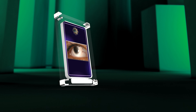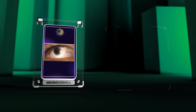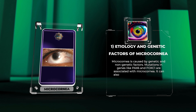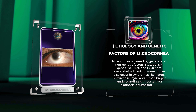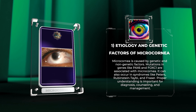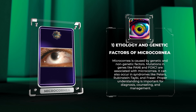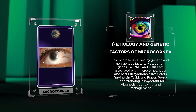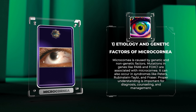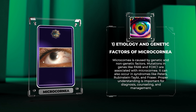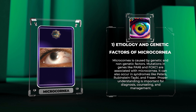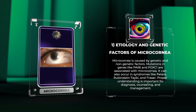Microcornea is caused by genetic and non-genetic factors. Mutations in genes like PACS6 and FOXC1 are associated with microcornea. It can also occur in syndromes like Peters, Rubenstein-Tabey, and Fraser. Proper understanding is important for diagnosis, counseling, and management.